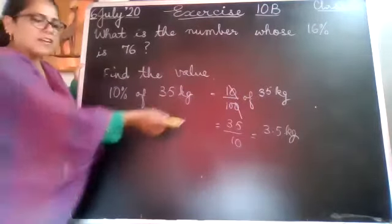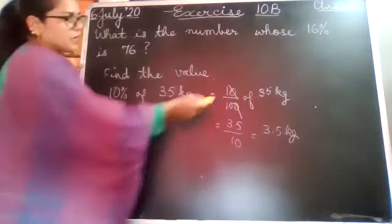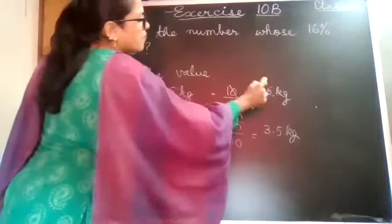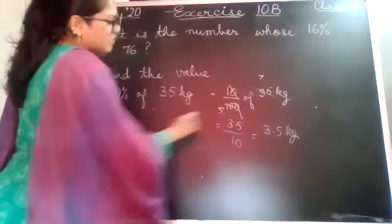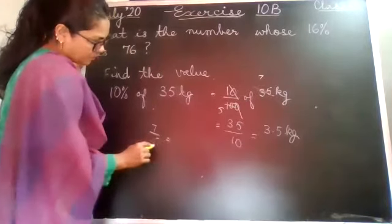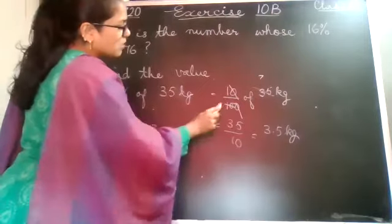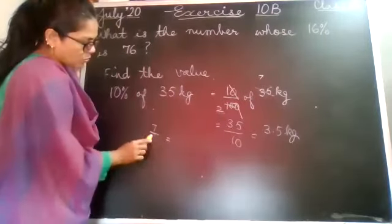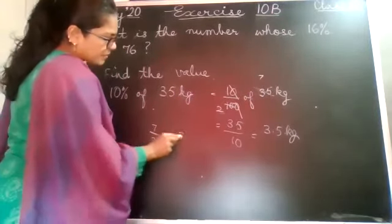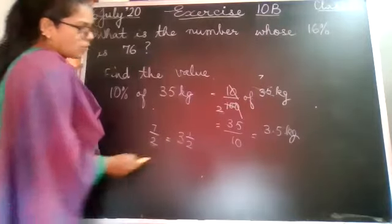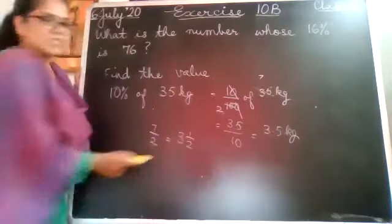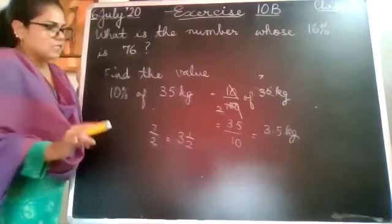If you want to reduce it, finally you will get the same answer. If you reduce it, it will become 7 upon 2, which means 2 divides 7, 3 times, 1 will be left. So whether it is 3.5 or whether it is 3½, it is one and the same.